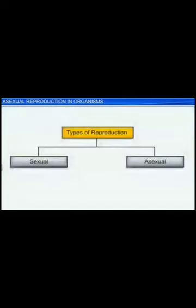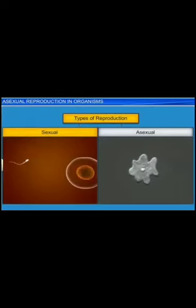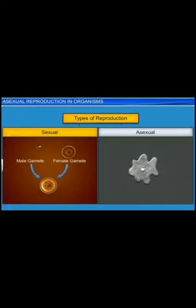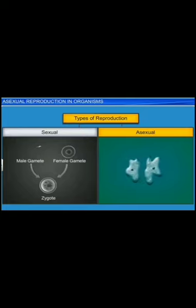In living organisms, we see two types of reproduction: sexual and asexual. In sexual reproduction, a gamete from the male parent fuses with a gamete from the female parent to form a zygote. However, in asexual reproduction, the organism or the parent cell divides to give rise to morphologically and genetically identical organisms called clones.